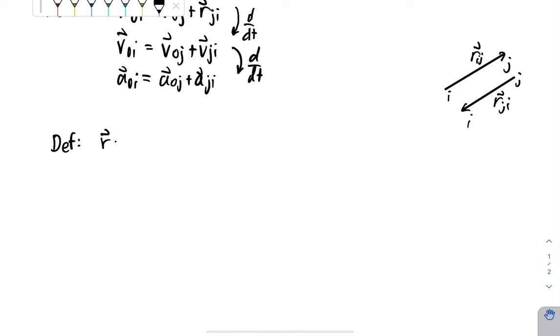So we can make the following relationships. Another definition. We can say R sub JI is equal to negative R sub IJ. V vector sub JI is equal to negative V vector sub IJ. And finally, A vector sub JI is equal to negative A vector sub IJ. Okay, so that's nice to have.